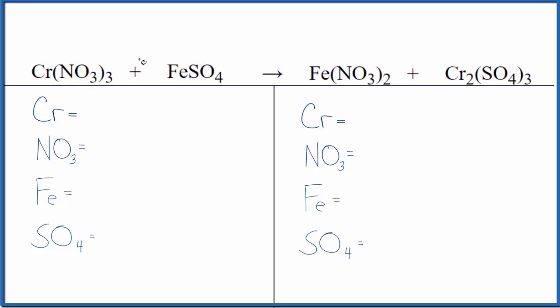Let's look at the type of reaction first. The chromium and the iron are just switching places. So the chromium is with the nitrate but it ends up with the sulfate. The iron is with the sulfate but now it ends up with the nitrate. This is a double displacement reaction.